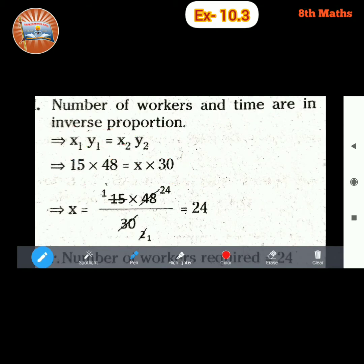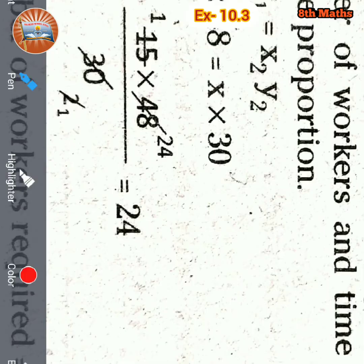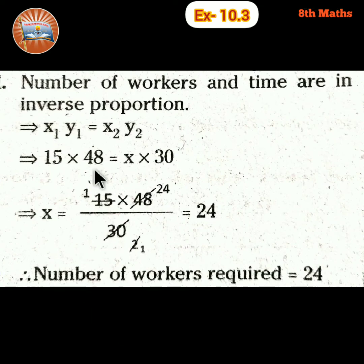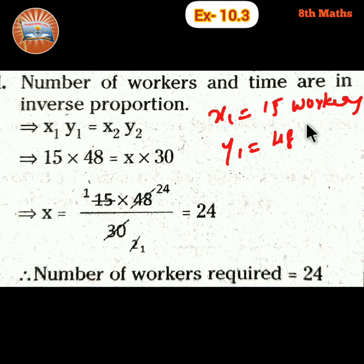Let's see. So x1, y1, x2, y2 is the inverse proportion condition. Already we know that. So x1 is given 15 workers. Y1 is time taken to build the wall, that is 48 hours.